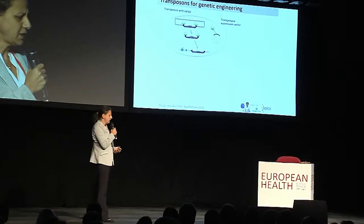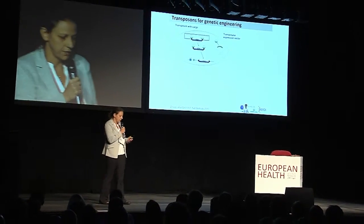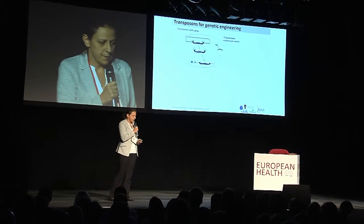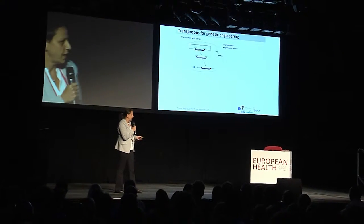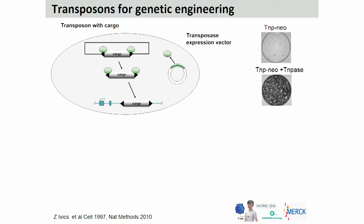Transposons are natural gene mobilizing vehicles that can autonomously move from one location in the genome to another. They also provide very useful genetic engineering tools where, in contrast to designer nucleases like the CRISPR-Cas system, they can very efficiently integrate the genetic cargo in a new genomic location.